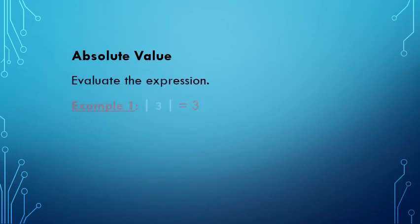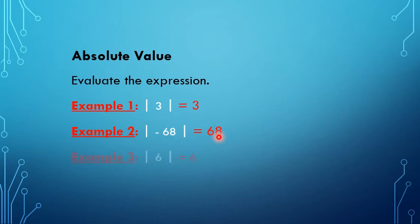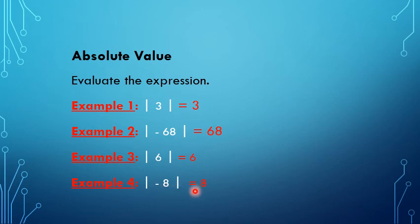The absolute value of positive 3 equals 3. The absolute value of negative 68 equals 68. Either the integer is positive or negative, the absolute value always equals a positive number. The absolute value of 6 equals 6. The absolute value of negative 8 equals 8. So the absolute value of any integer, either positive or negative, always equals a positive number.